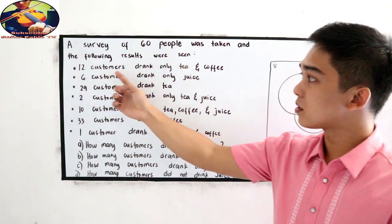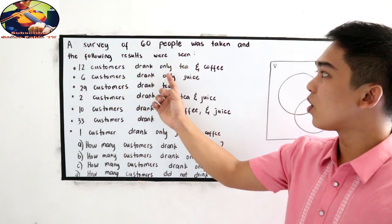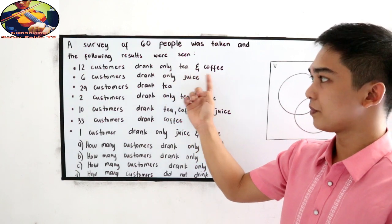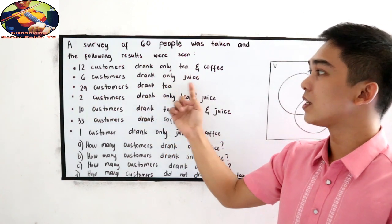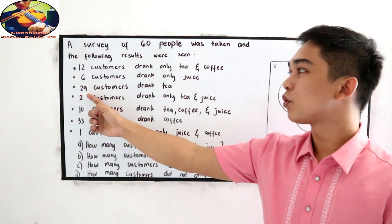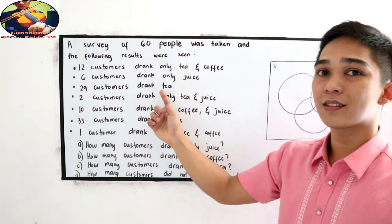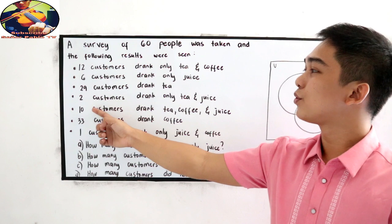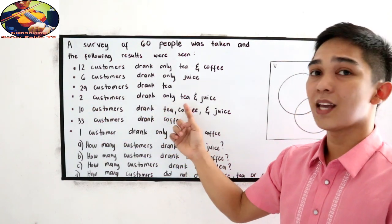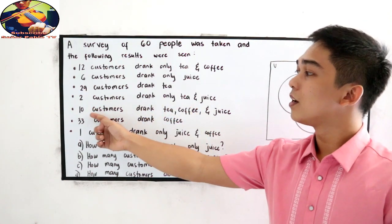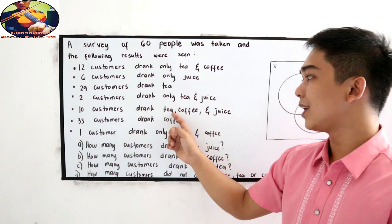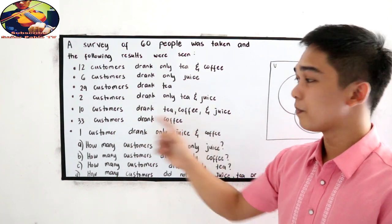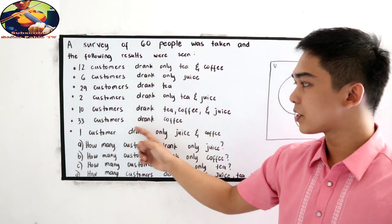12 customers drank only tea and coffee. 6 customers drank only juice. 29 customers drank tea. 2 customers drank only tea and juice. 10 customers drank tea, coffee and juice. 33 customers drank coffee.